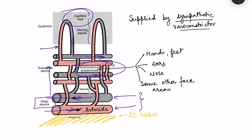These arteriovenous anastomoses are present in apical regions of the body — in the arms, palms, soles, fingertips, toes, ears, nose, and some other face areas like the lips. Their presence is important for thermoregulation.